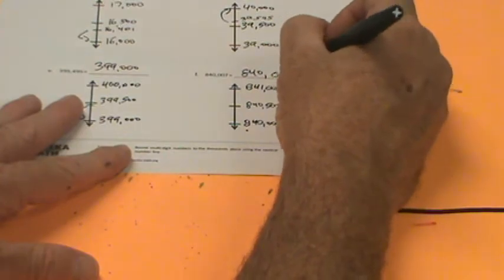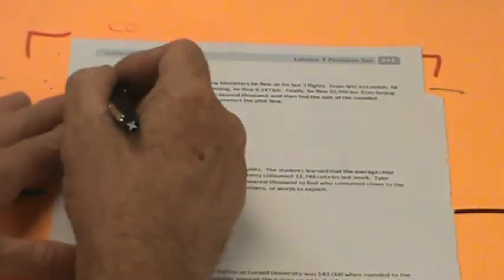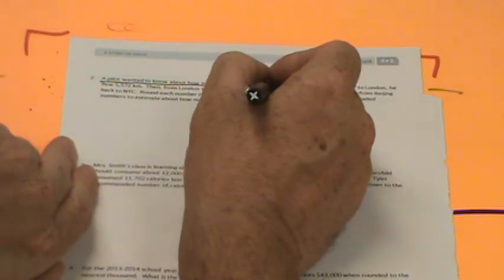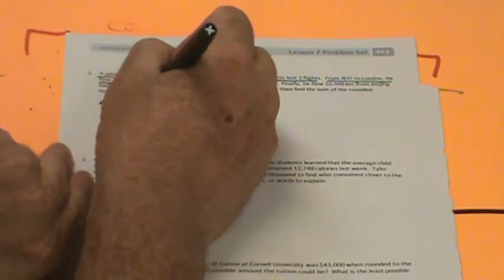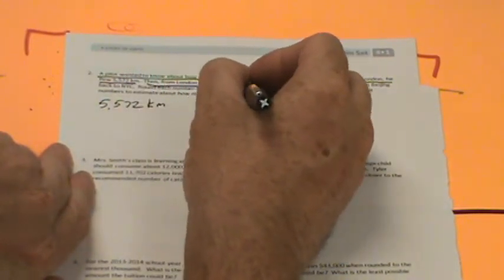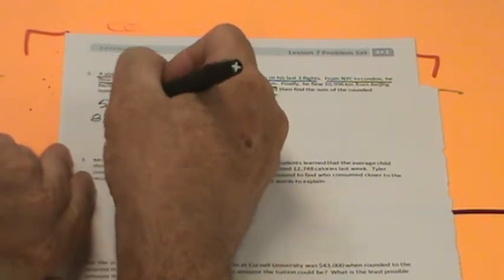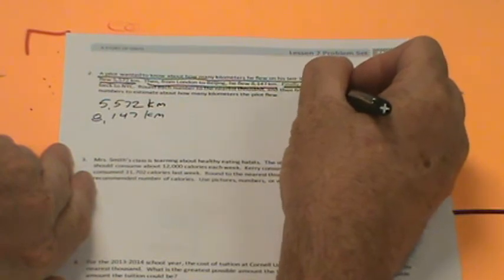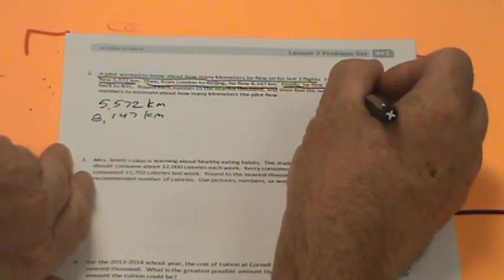Let's continue on the back side. We have some word problems here. A pilot wanted to know about how many kilometers he flew on his last three flights. From New York City to London he flew 5,572 kilometers. From London to Beijing he flew 8,147 kilometers. Finally, he flew 10,996 kilometers from Beijing back to New York City.